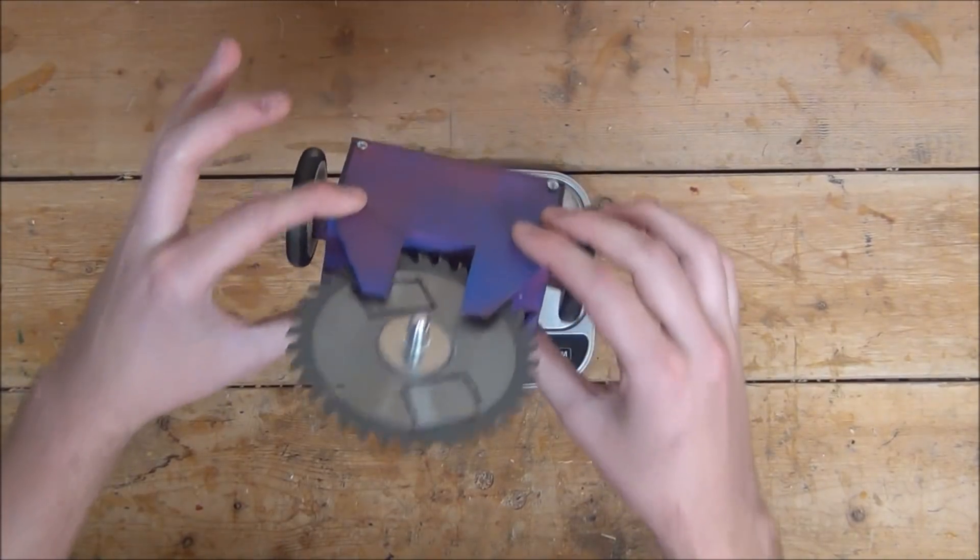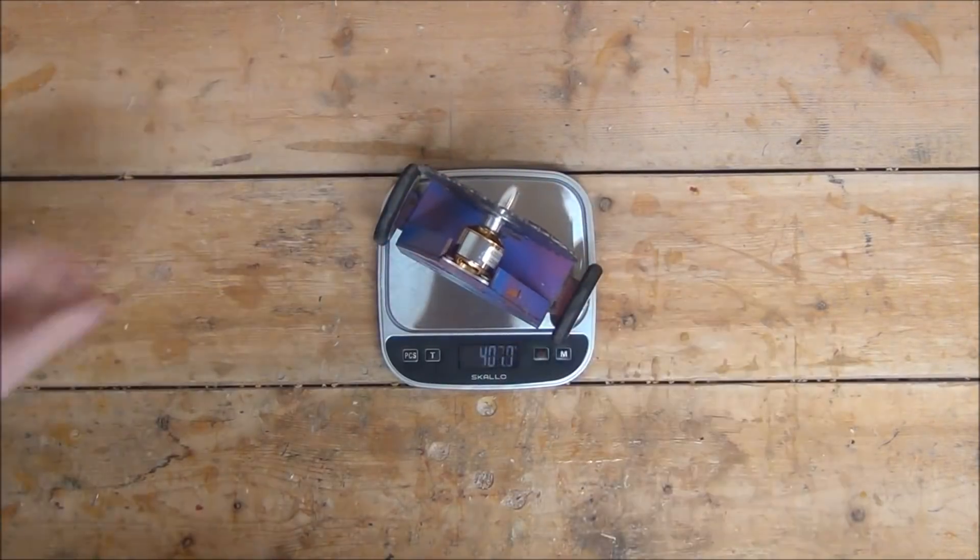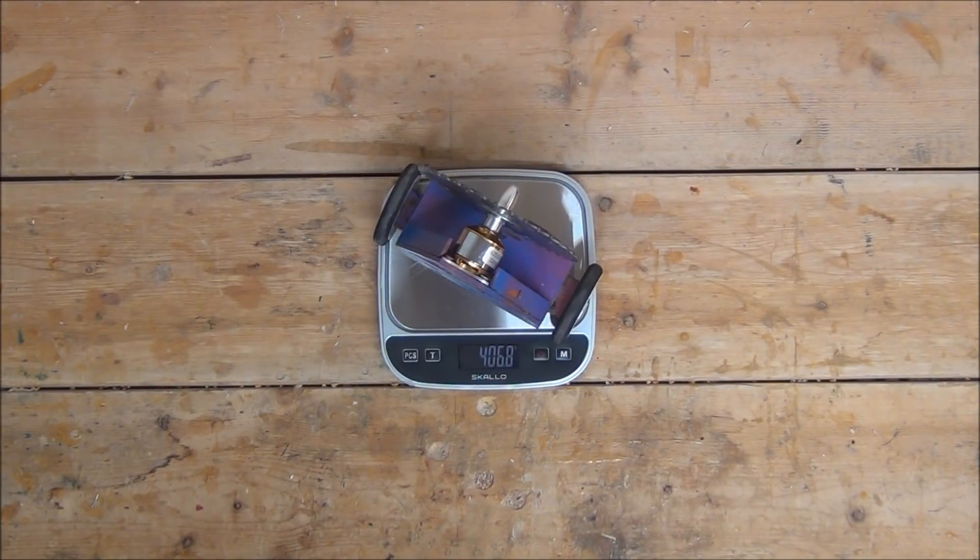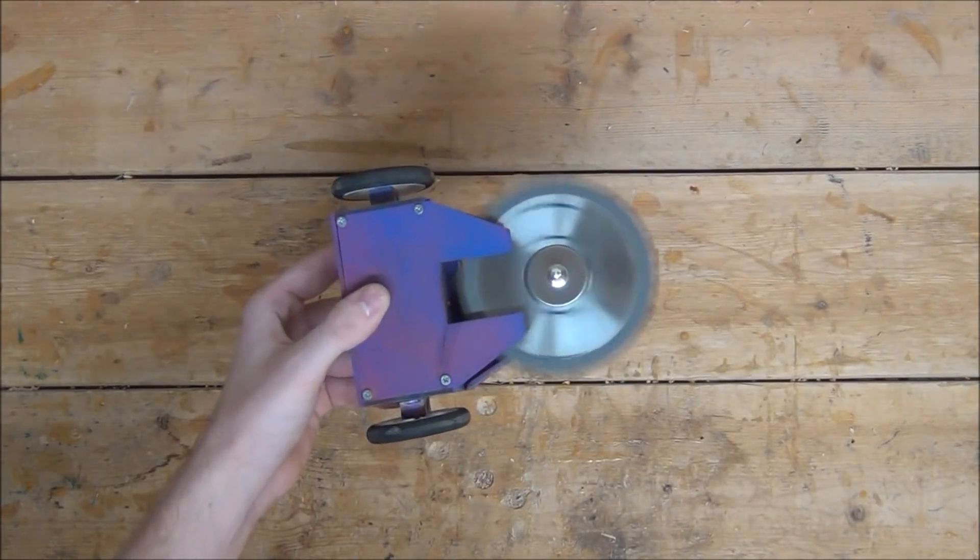So with everything in the robot, the robot complete, it weighs in at 407 grams, 50 grams below weight. With that good news, we can now go ahead and test it.